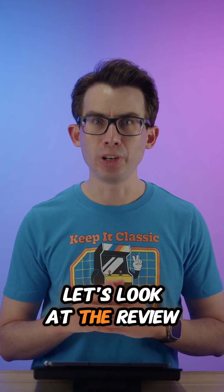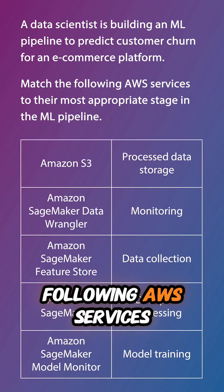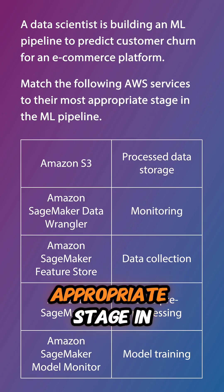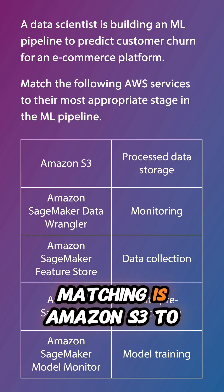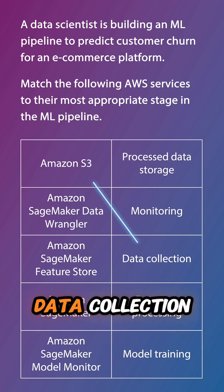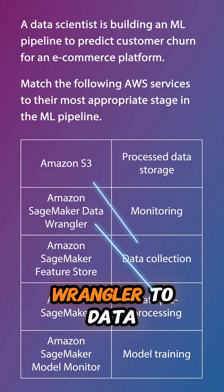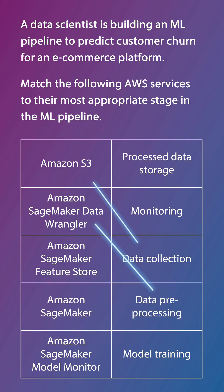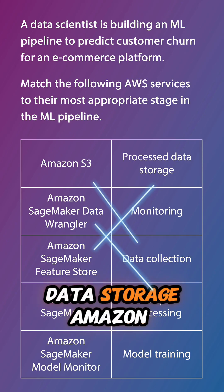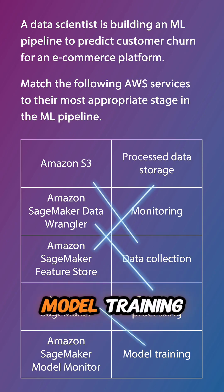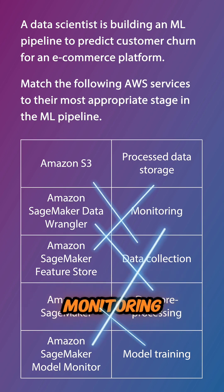Let's look at the review question from the last episode, asking you to match the following AWS services to their most appropriate stage in the ML pipeline. The correct matching is Amazon S3 to data collection, Amazon SageMaker Data Wrangler to data pre-processing, Amazon SageMaker Feature Store to processed data storage, Amazon SageMaker to model training, and Amazon SageMaker Model Monitor to monitoring.